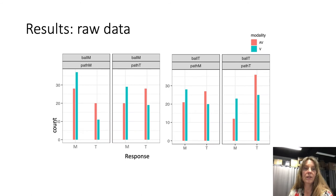Looking at the results, we can see that in the audiovisual condition, whenever either the ball or the path or indeed both were of the takete kind, then participants tended to give more takete responses.